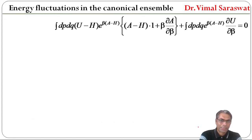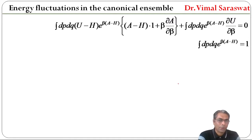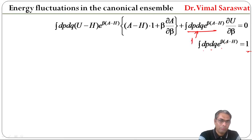From the identity: integration dp dq e raised to beta(A minus H) equal to 1. So this value is 1. From identity, this value is 1. Now only del U by del beta remains, and this full value is preserved.